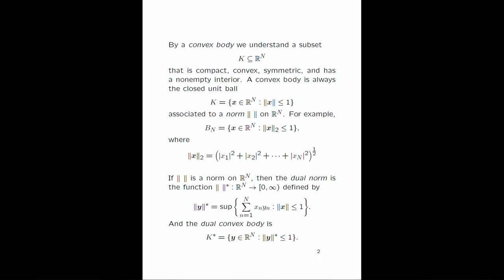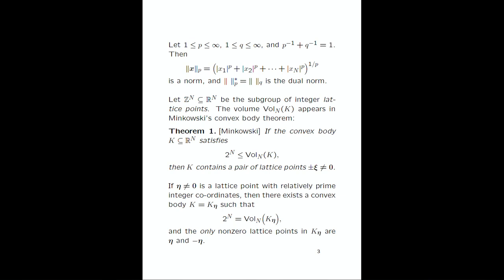You can define the dual norm on vectors y in R^n by a simple recipe, and a few lines show that it is also a norm, giving a dual convex body K-star. One of the simplest examples: if you start with the little l_p norm and choose q so that 1/p + 1/q = 1, then the dual of the l_p norm is the l_q norm. If p = q = 2, the dual of a sphere is itself. If p = 1, you get a generalized octahedron, and the dual norm is the infinity norm, whose convex body is a cube.